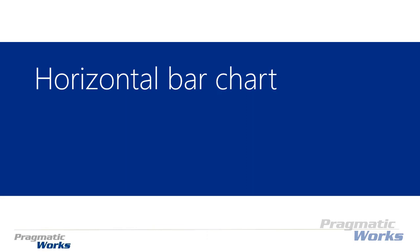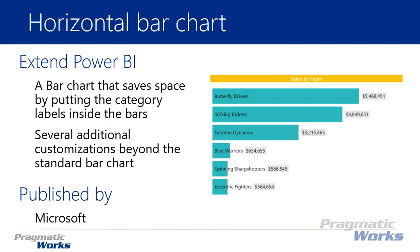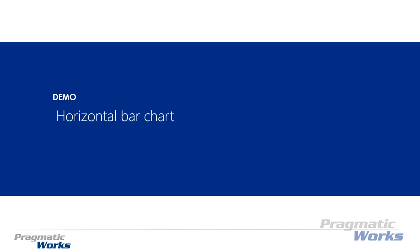Welcome back to the Power BI custom visuals course. In this module we're going to be looking at the horizontal bar chart. It is somewhat similar to the standard bar chart available inside Power BI, but there are several additional customizations available, such as overlaying bars and additional label customizations. This one has extra functionality not in the standard bar chart, and it's developed by Microsoft.